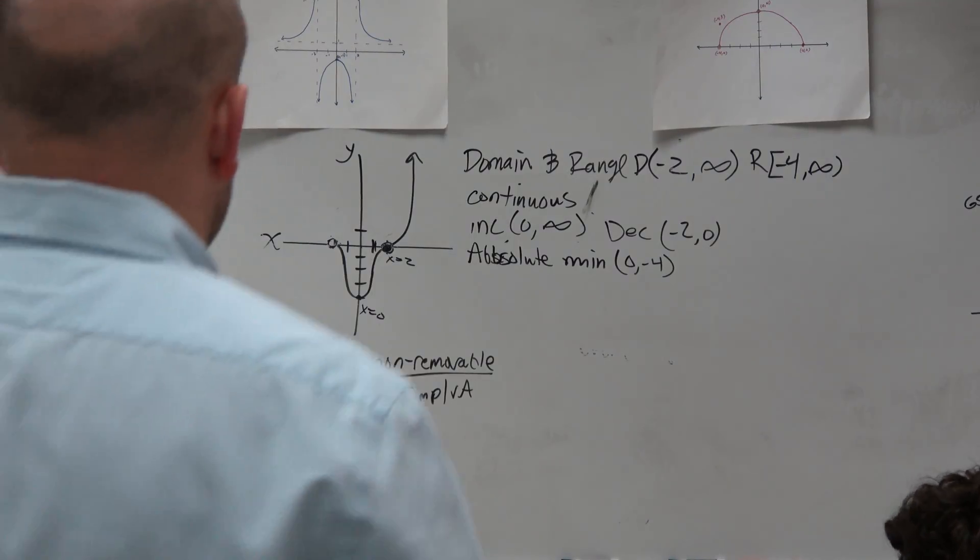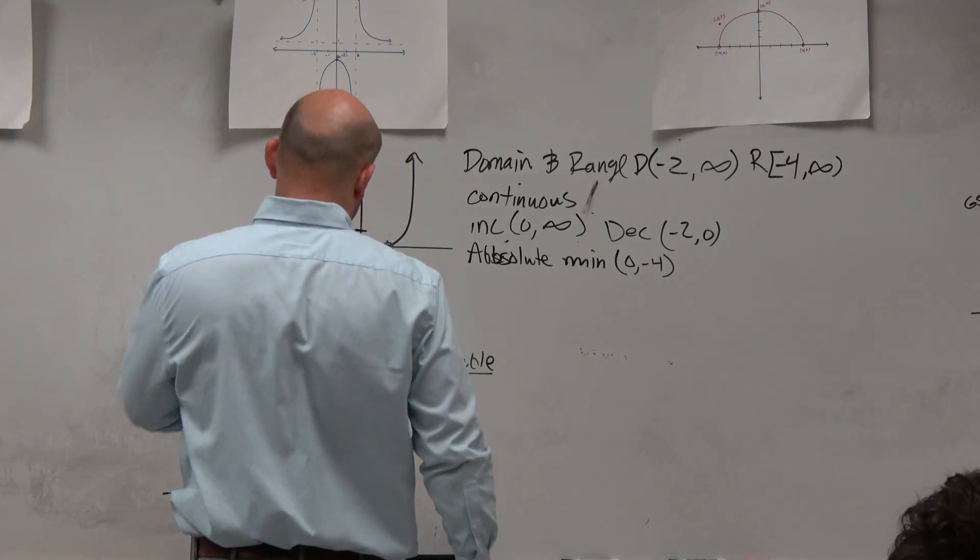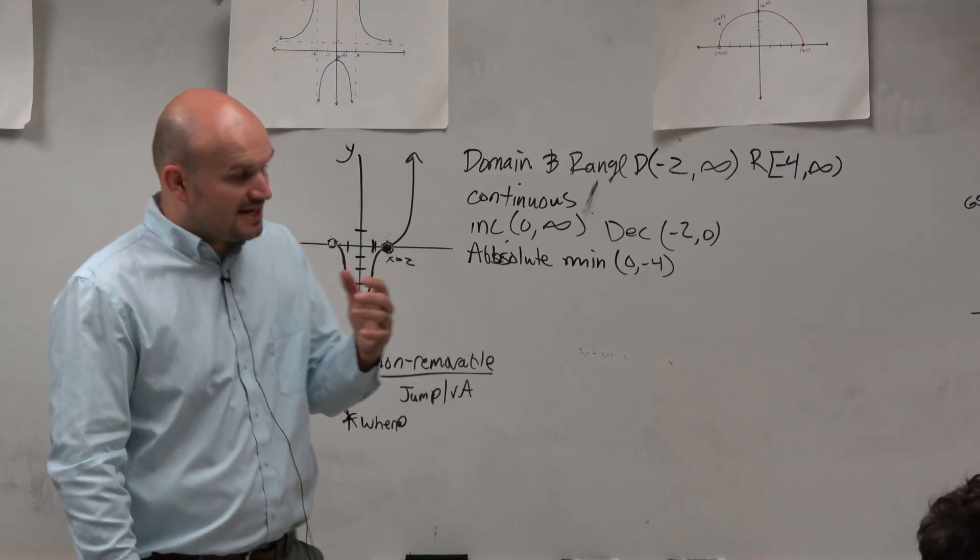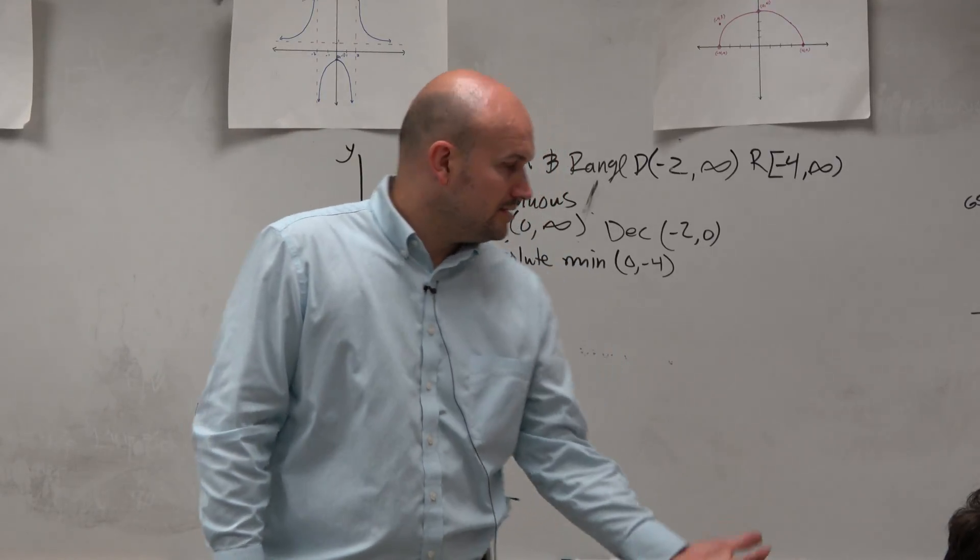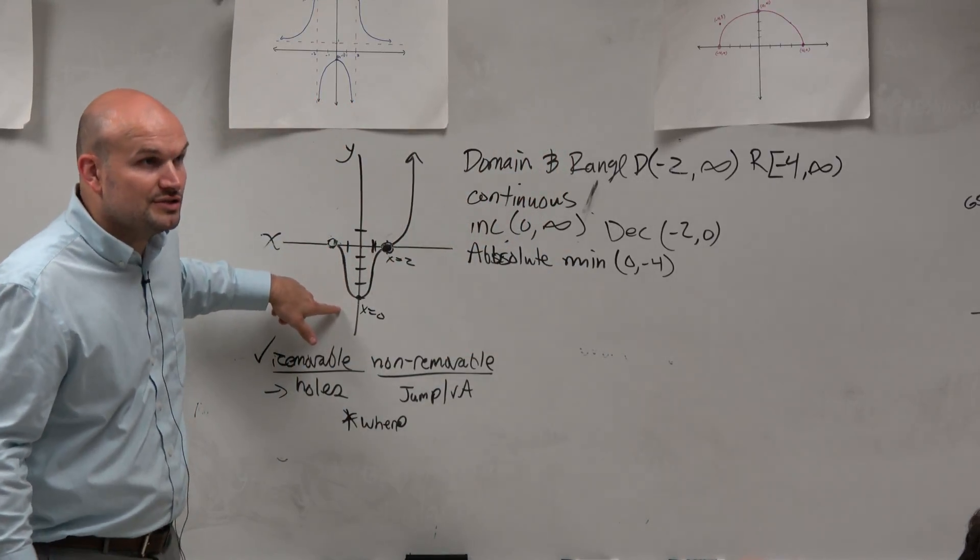We'll kind of go through this rather quickly now. Boundness. Boundness basically sees, guys, if you have an absolute minimum, the graph can't go any lower. Would you guys agree?